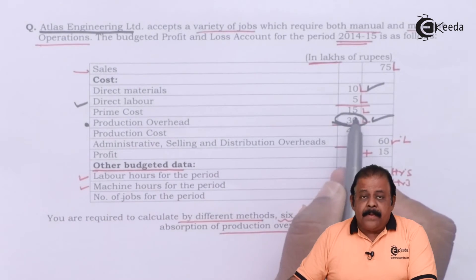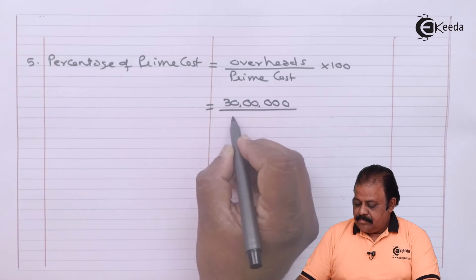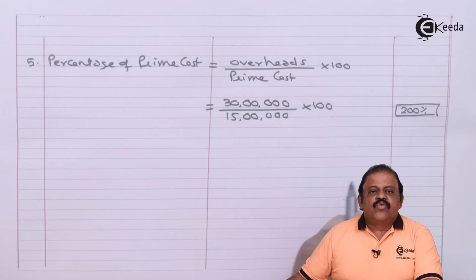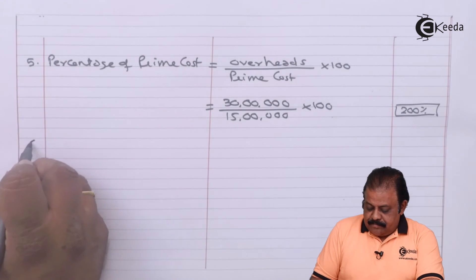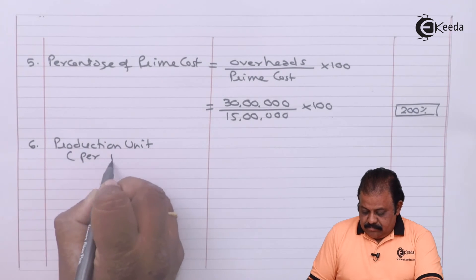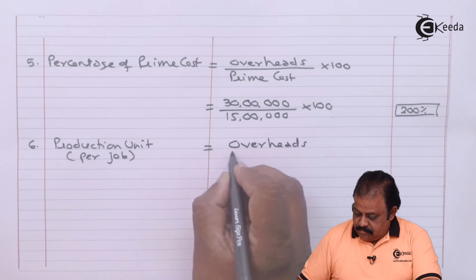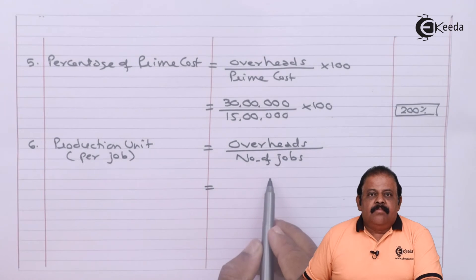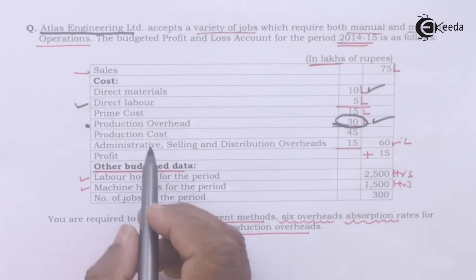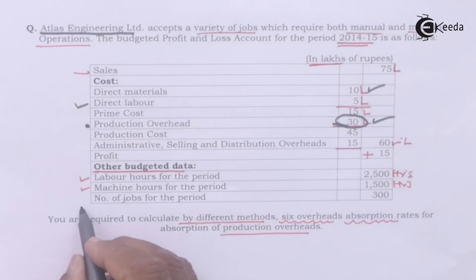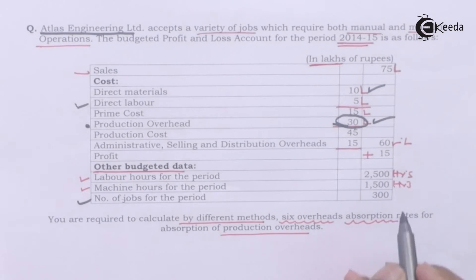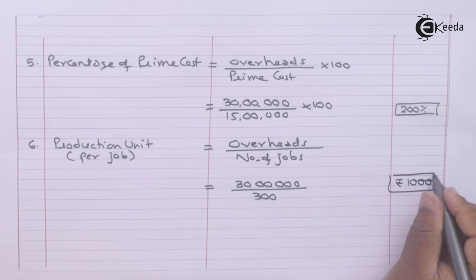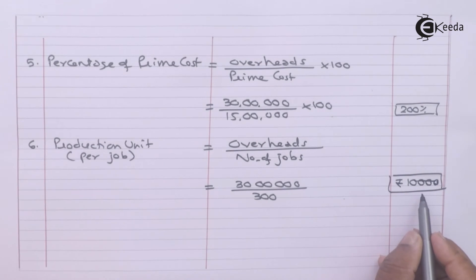The prime cost percentage method gives 200 percent. For the per job method: overheads divided by number of jobs — production overheads 30 lakhs divided by 300 jobs gives rupees 10,000 per job.